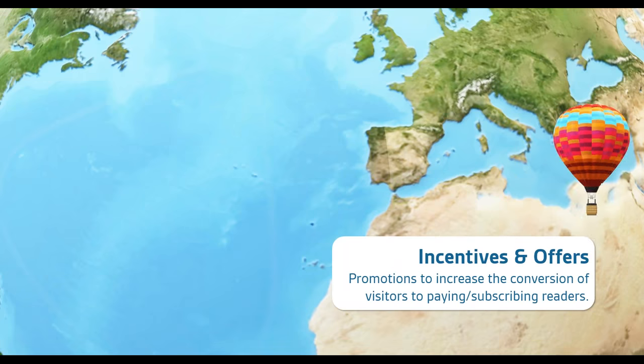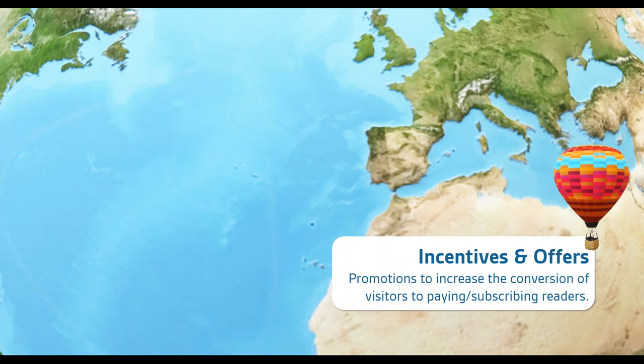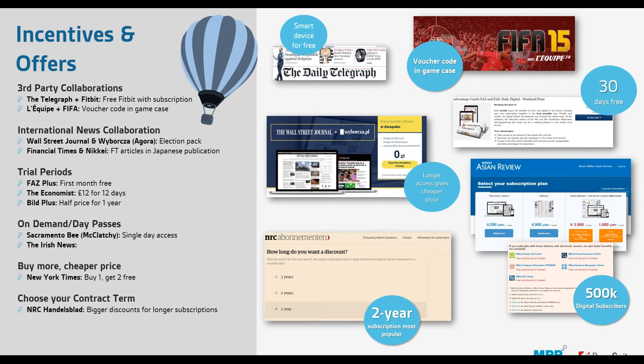Moving on to offers and incentives — the overriding message is that you need to experiment, be flexible, and try lots of different offers and incentives, because these are the areas where we really see peaks in subscriber acquisition. I call it the 'golden triangle' for third-party collaborations — customers, publishers, and advertisers all win. The customer gets a nice additional product, in the case of the Telegraph it was a Fitbit; the publisher most likely gets a full annual subscription; and the partner or advertiser gets great increased exposure and maybe some editorial partnership on the content.